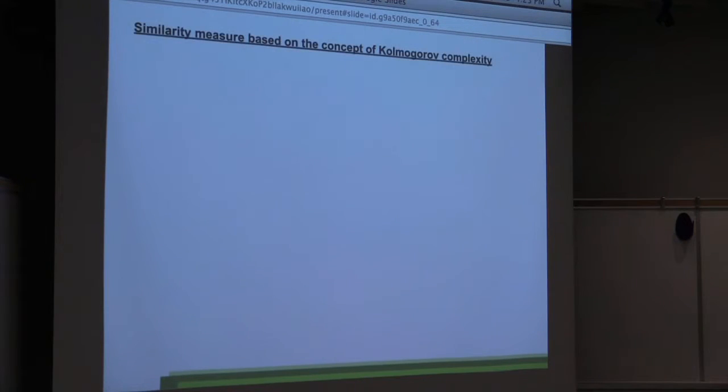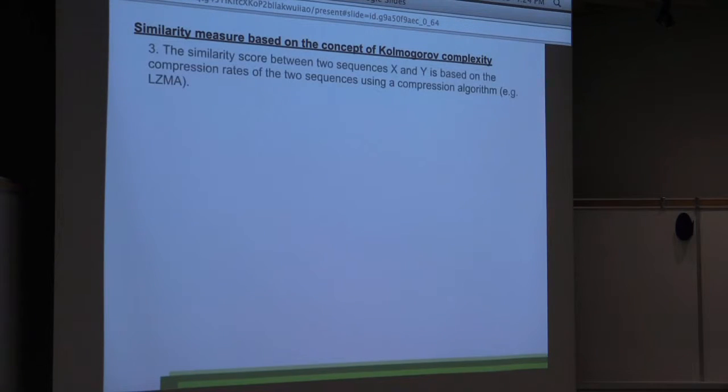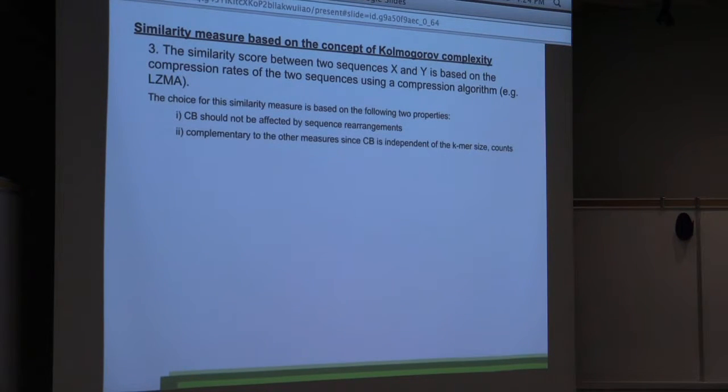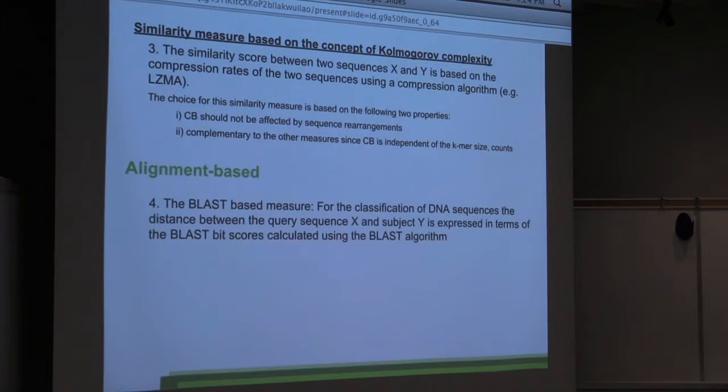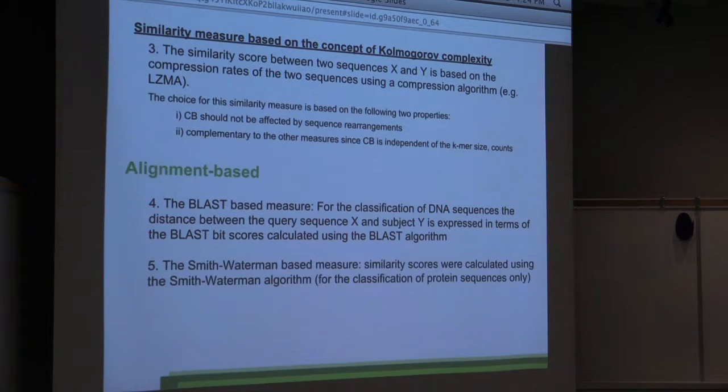The third alignment-free similarity measure is based on Kolmogorov complexity. It's a compression-based method, and we're looking at the difference in compression rates between sequence X and Y using a compression algorithm like LZMA. The reason why we choose this similarity measure is because first of all, we're expecting it to not be affected by sequence rearrangements. And second, it is complementary to the k-mer based ones. It doesn't depend on either the k-mer or the k-mer counts. The other two measures we decided to incorporate in our model are the BLAST measure for DNA sequences and the Smith-Waterman for protein sequences.